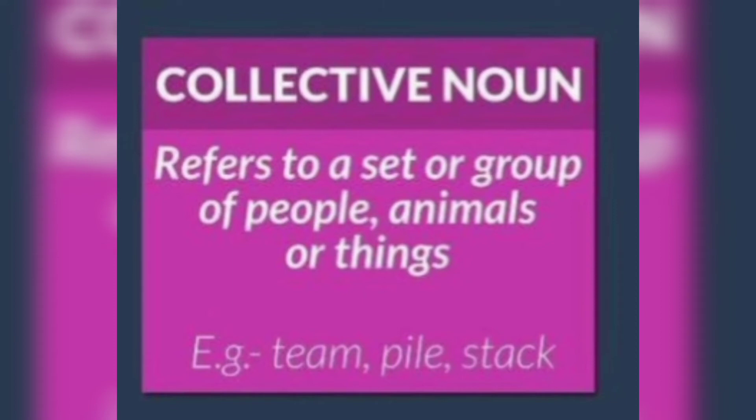The next type of noun is collective noun. Collective noun is the name given to a group of people, animals or things when we speak of them as a whole. For example, team, pile, stack. Also, collective nouns often have plural forms.